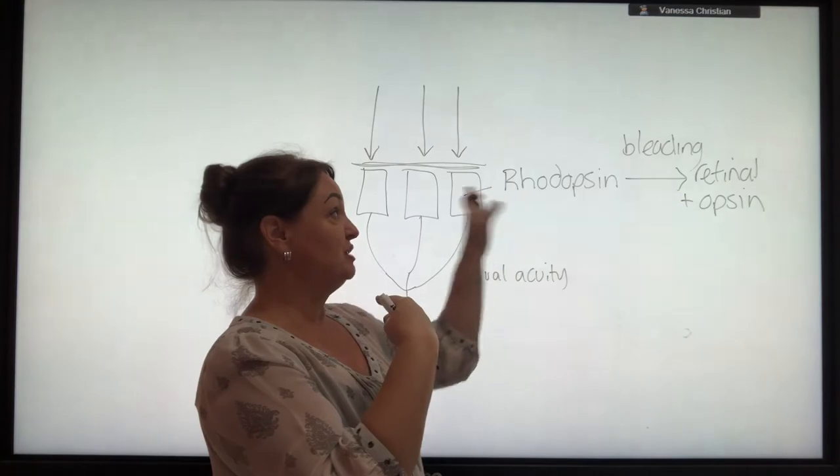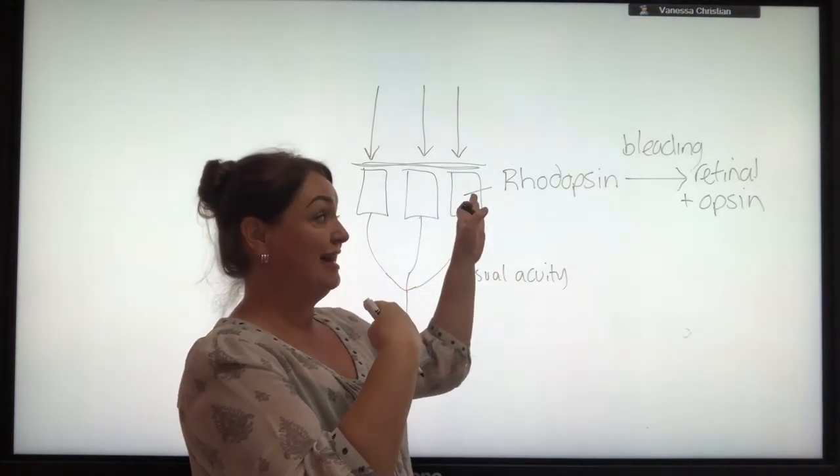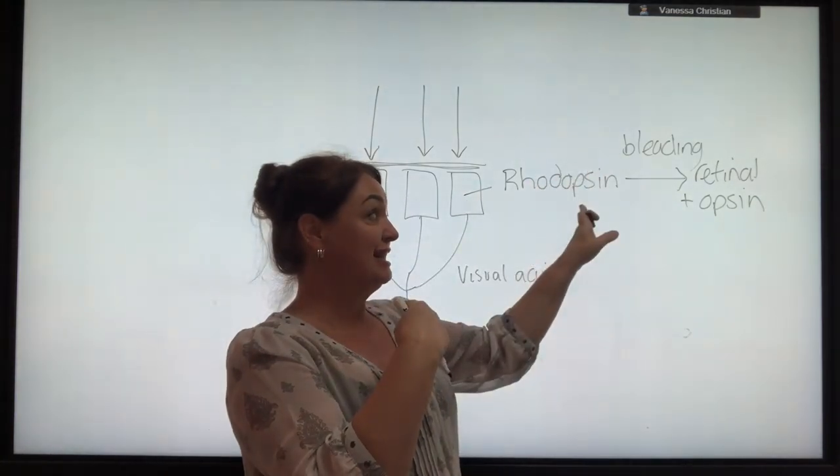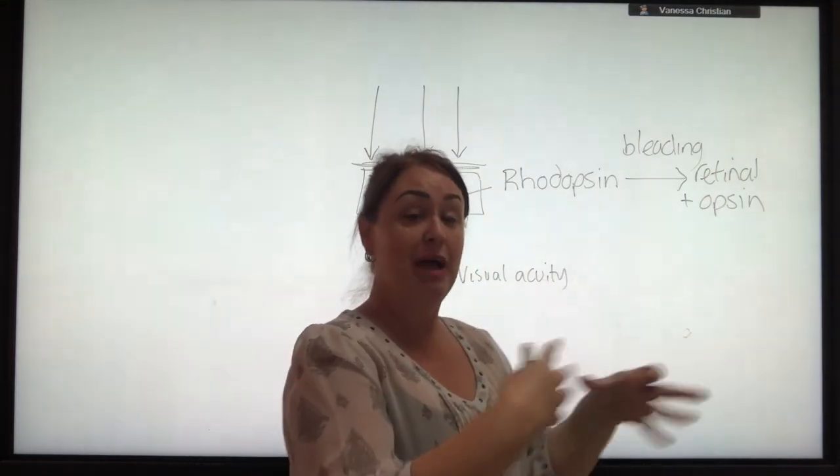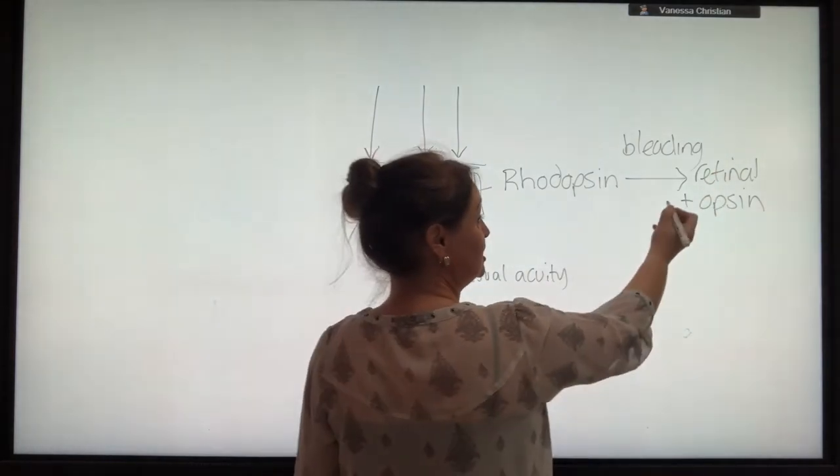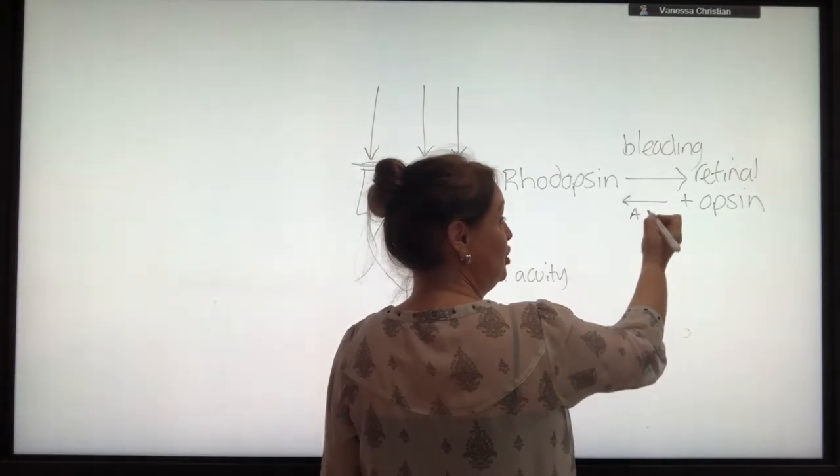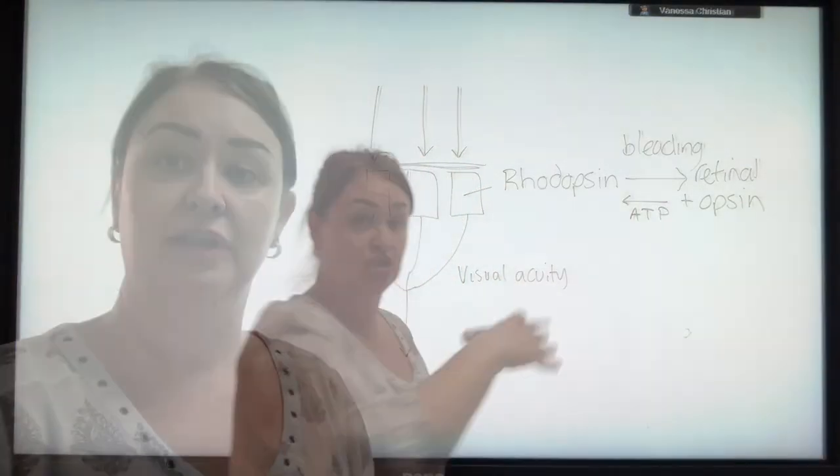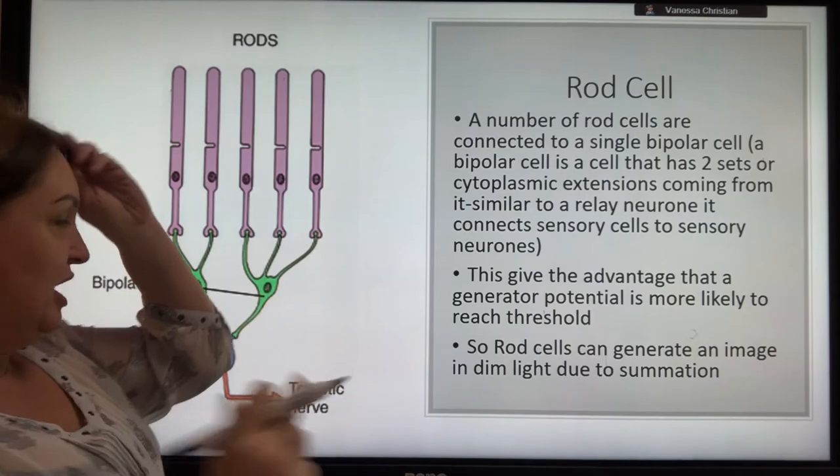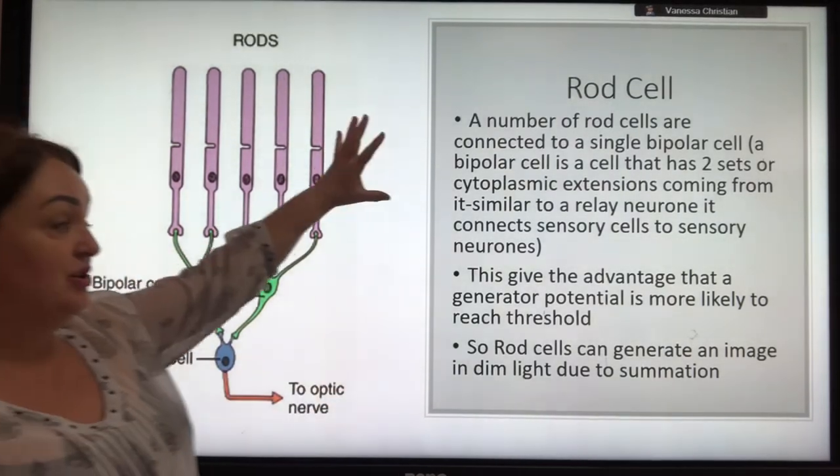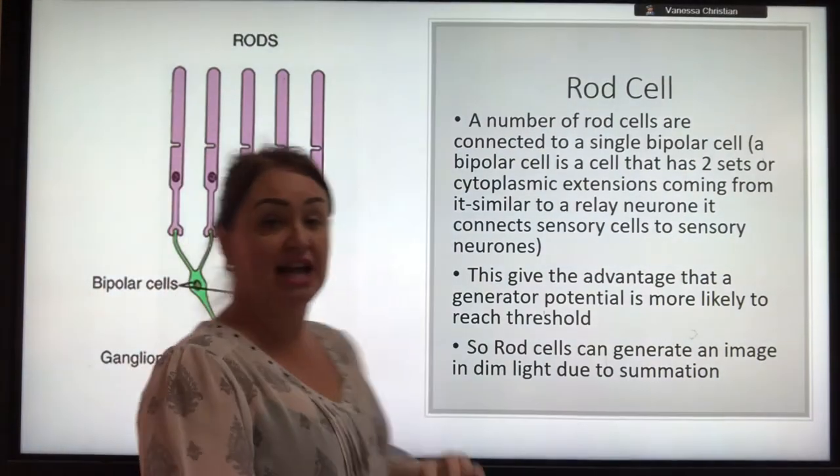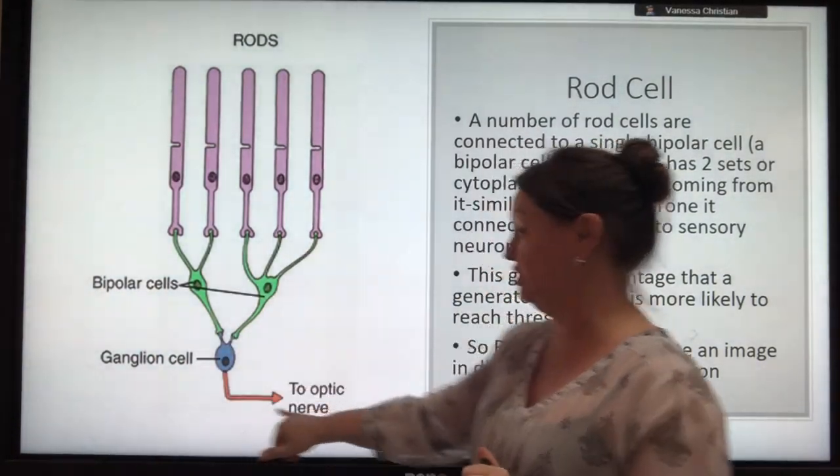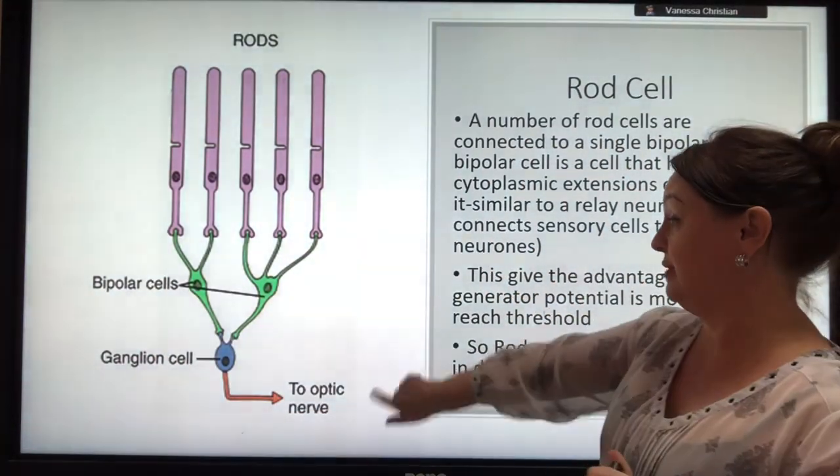In this case, rhodopsin, which is a pigment that's normally in there. When light hits it, it breaks down into retinal and opsin, and that's what changes the permeability to sodium. And then, of course, later on, we build that back up using ATP back into rhodopsin. So here we've got our rod cell. Here you can see we've got our bipolar cells, which are just attaching each rod cell up onto the optic nerve, and so it goes on.